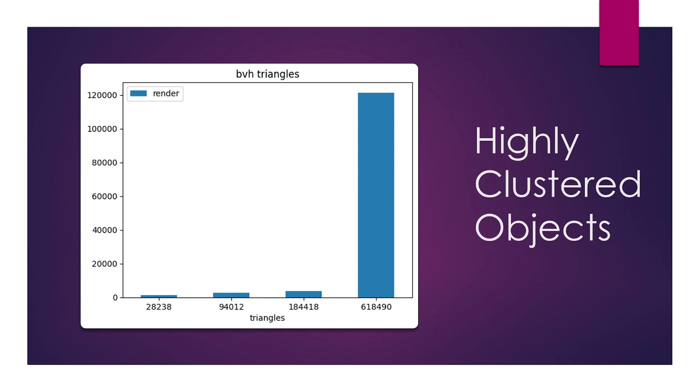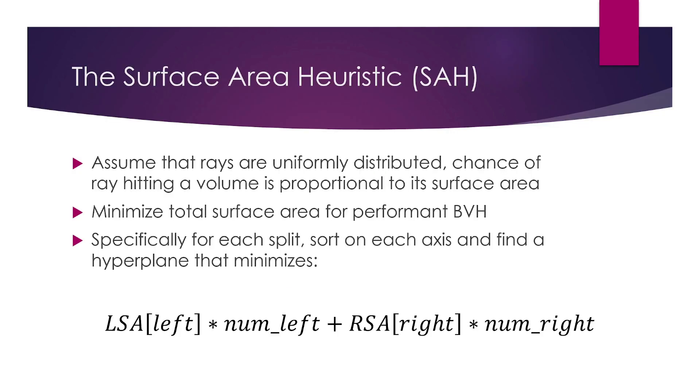To solve this, there are different heuristics we can run. One of them is the surface area heuristic. We can assume that rays are uniformly distributed, and the chance of a ray hitting a volume is proportional to its surface area. So, we need to minimize the total surface area for a performance BVH. Specifically, for each split, we would like to sort on each axis and find the hyperplane in space that minimizes this function. This function basically states that the surface area of the left half times the number of items in the left half plus the surface area of the right half times the number of items in the right half should be minimized. And we're going to run this heuristic over all three axes, X, Y, and Z, and all possible split points on that axis. Unfortunately, this is still being worked on. This surface area heuristic is in progress right now, so we don't have results to show you in a video demonstration.